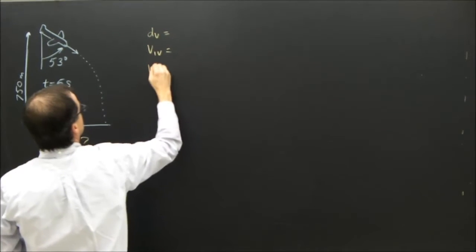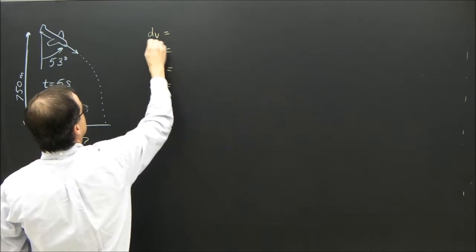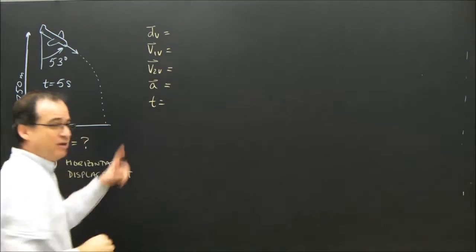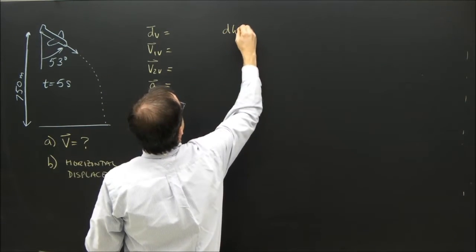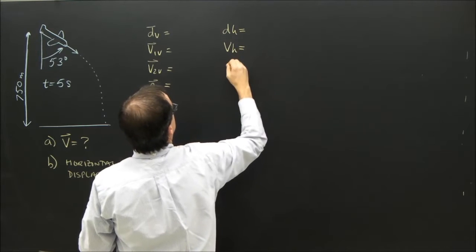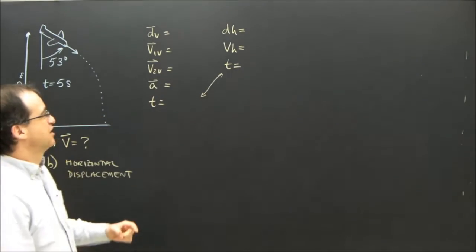I want D vertical, V1 vertical, V2 vertical, A, and T. That's all my vertical information. The horizontal information: D horizontal, V horizontal, and T. And the only thing that goes from one column to the other is time.